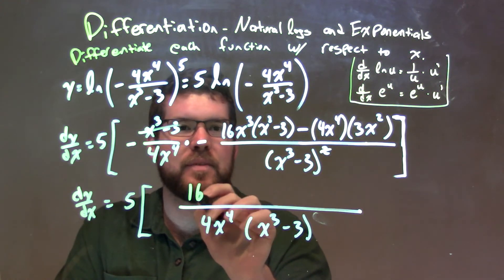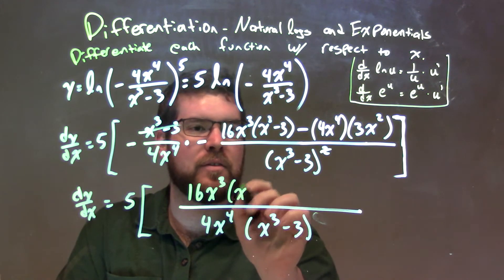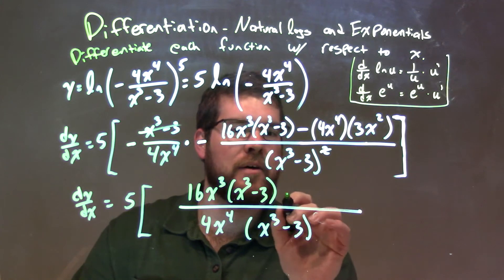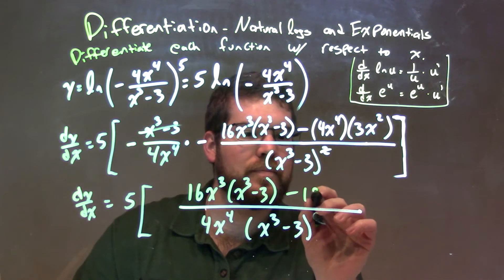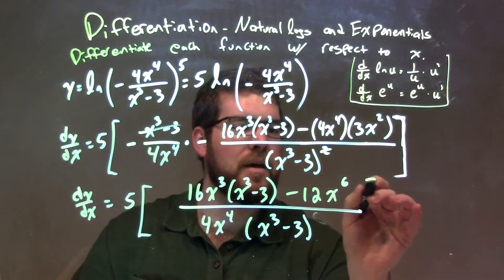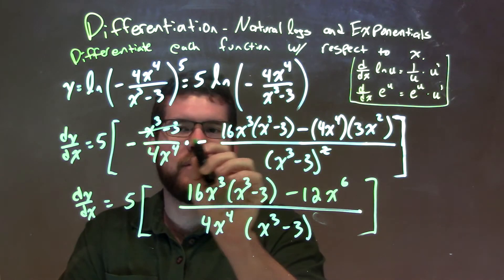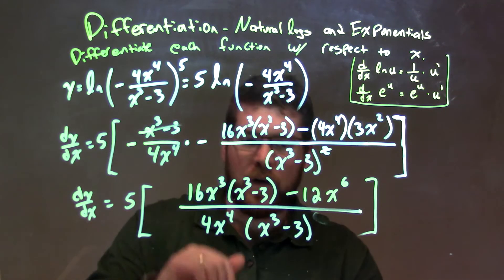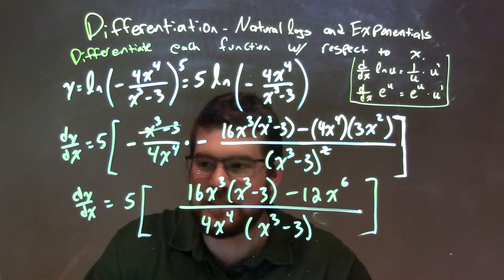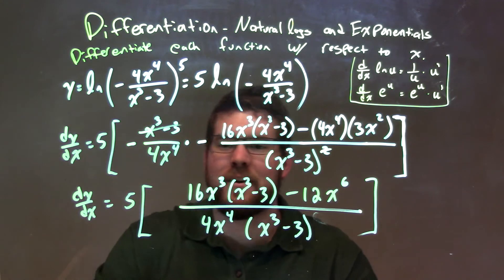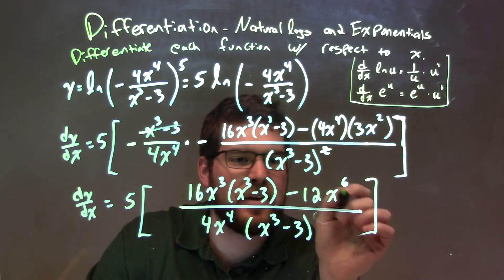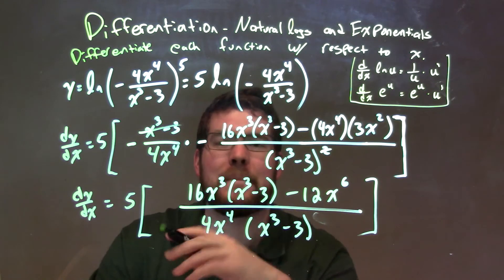So our numerator becomes 16x to the third times x to the third minus 3, minus 12x to the sixth — since 4 times 3 is 12 and x to the fourth times x squared is x to the sixth. Our final answer is 5 times the bracket: 16x to the third times x to the third minus 3, minus 12x to the sixth, all over 4x to the fourth times x to the third minus 3.